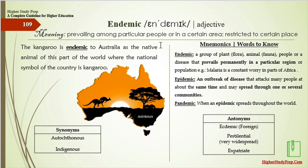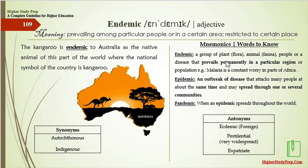Endemic means prevailing among particular people or in a certain area, restricted to certain places. The kangaroo is endemic to Australia as the native animal of this part of the world — the national symbol of the country. The synonyms for endemic are autochthonous or indigenous. As a noun, endemic refers to a group of plants, animals, people, or a disease that prevails permanently in a particular region — for example, malaria is a constant endemic in parts of Africa.